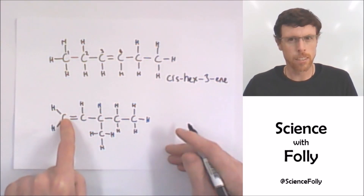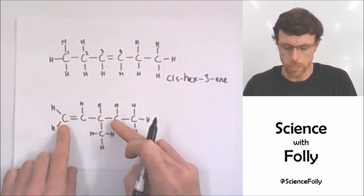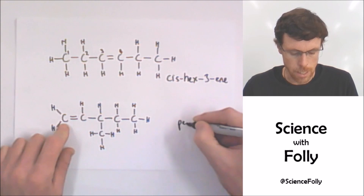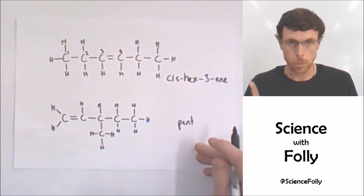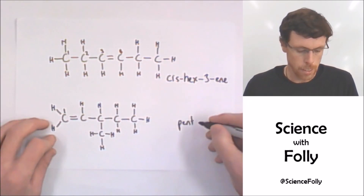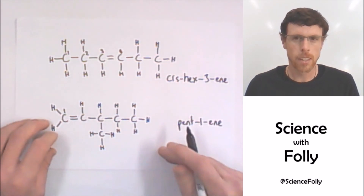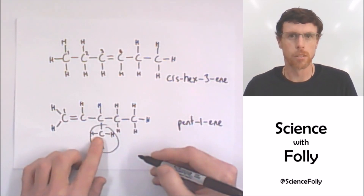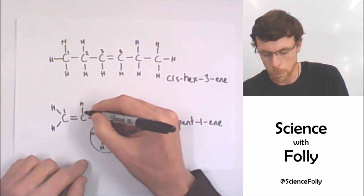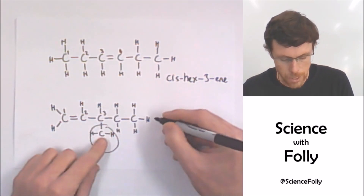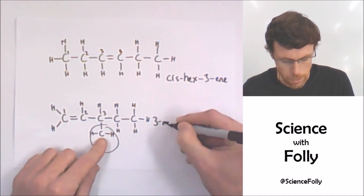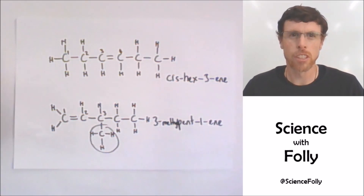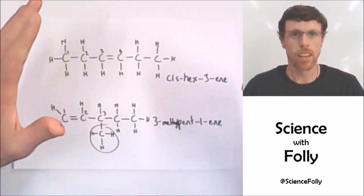This one here: we've got one, two, three, four, five carbons in the chain, so it's clearly a pentene. Where's the double bond? It's coming off carbon number one, so it's pent-1-ene. And we've got this group hanging off the bottom — it's a methyl group coming off carbon three. So it's 3-methyl-pent-1-ene. That was just a short introduction to alkene structure. Next time we'll have a look at the reactions of alkenes.